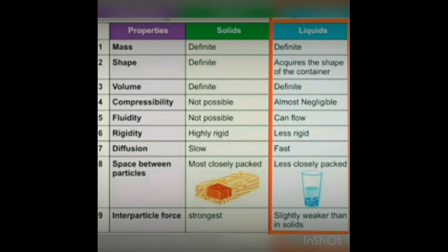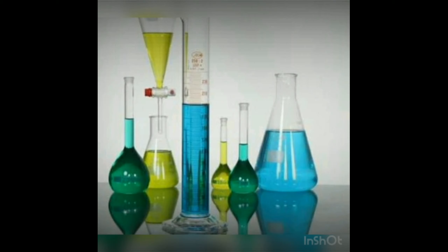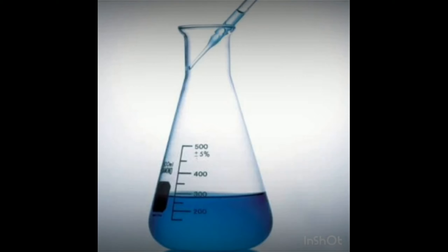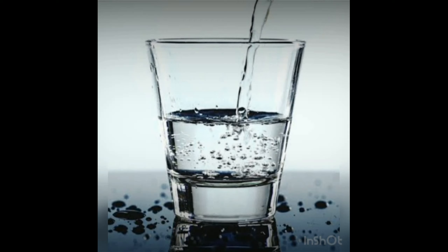Properties of liquids: liquids have definite mass, definite volume, and acquire the shape of the container. To demonstrate, take a measuring jar and containers of different shapes. Take some water in one container, observe its shape, then pour the same water into another container — the water acquires the shape of that container. Repeat for all containers.